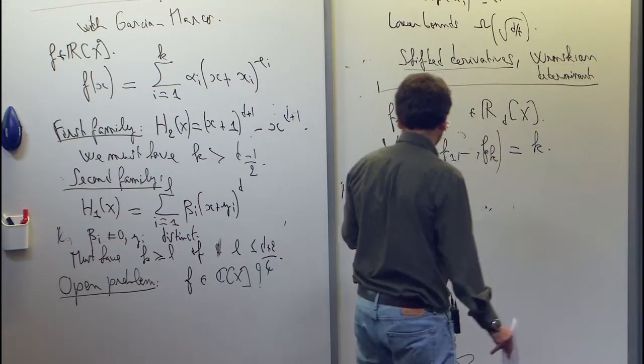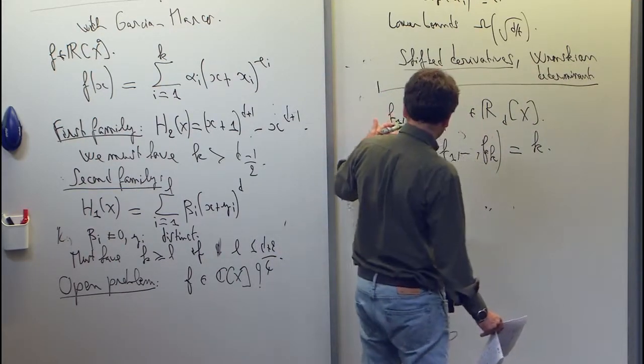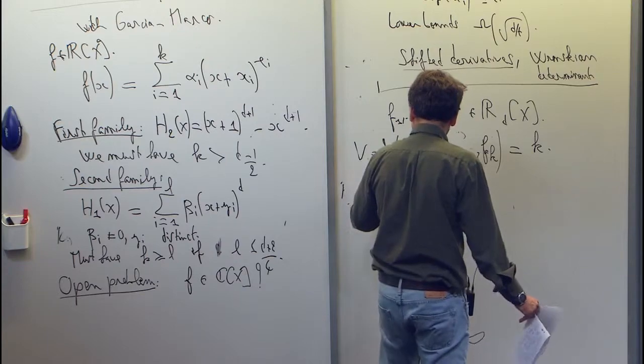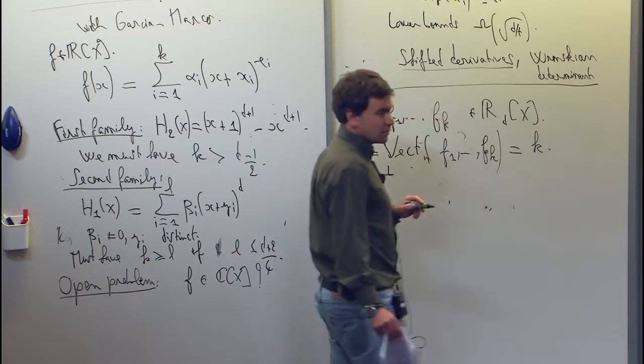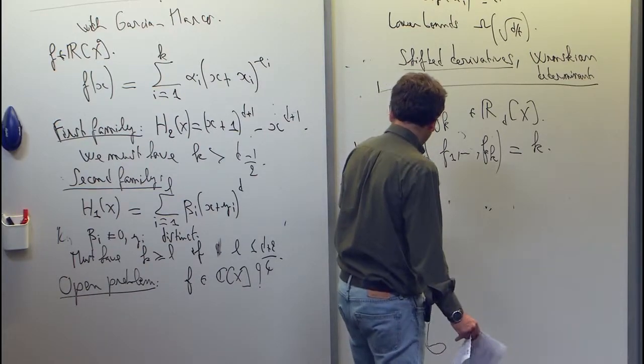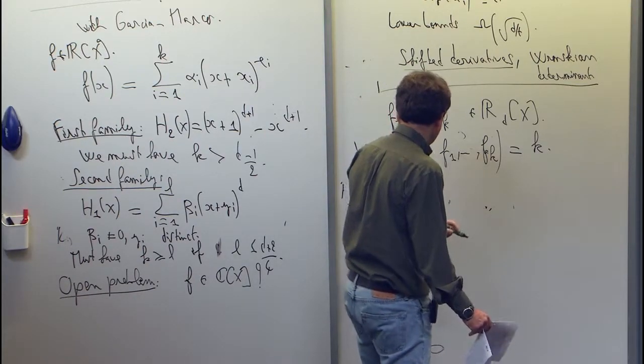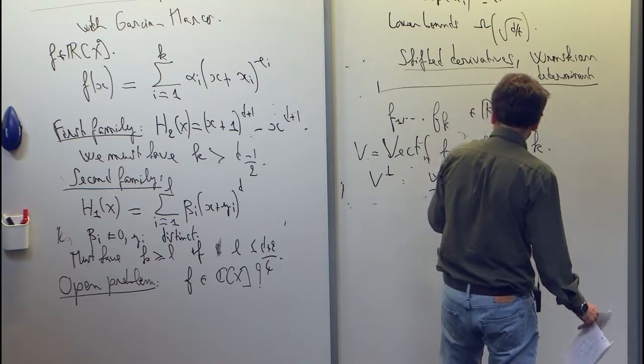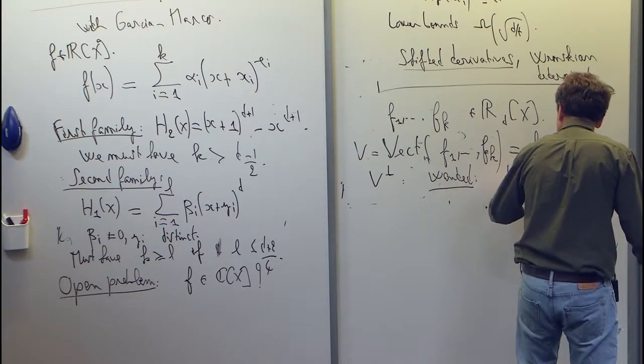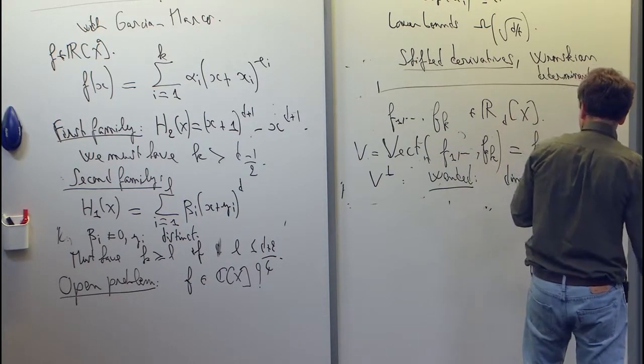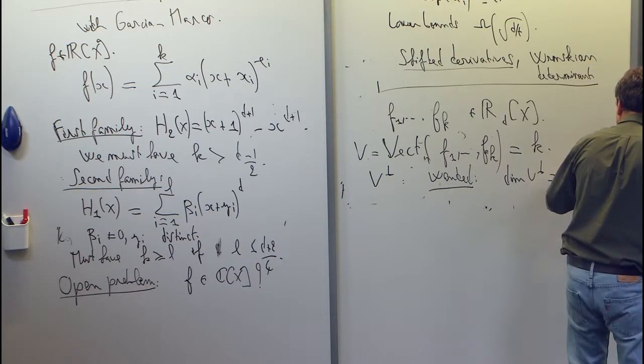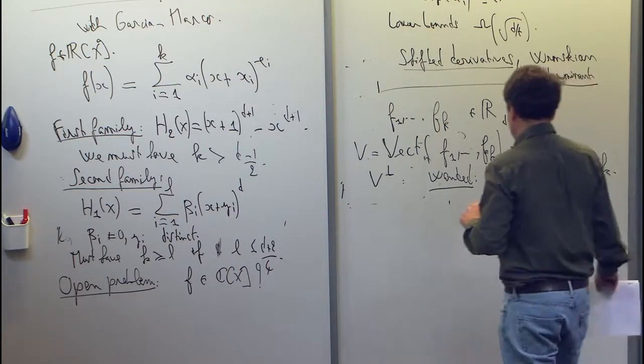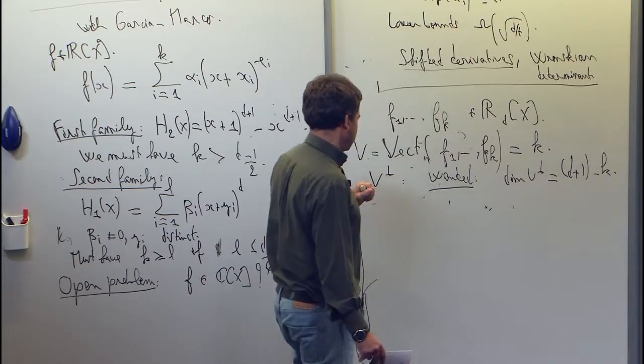Now, one idea is to look at the orthogonal of this space. Let's call this V. So we look at the orthogonal of this space. So now what we want is that the dimension of the orthogonal be equal to d plus 1, that's the dimension of R d minus k. And so this is like looking at it from a dual point of view.